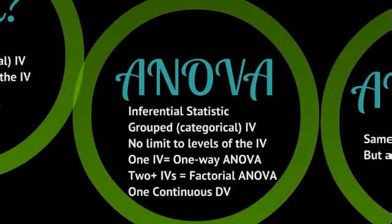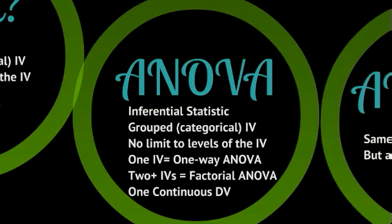If you only have one independent variable that you are testing, that would be called a one-way ANOVA. For instance, if you were looking at the effects of gender on height, that would be a one-way ANOVA. If you are looking at the effects of age on height, you might divide age into children, adults, middle-aged, and elderly people — four groups — and compare them on height. But if you wanted to look at both gender and age, then you would need a factorial ANOVA.